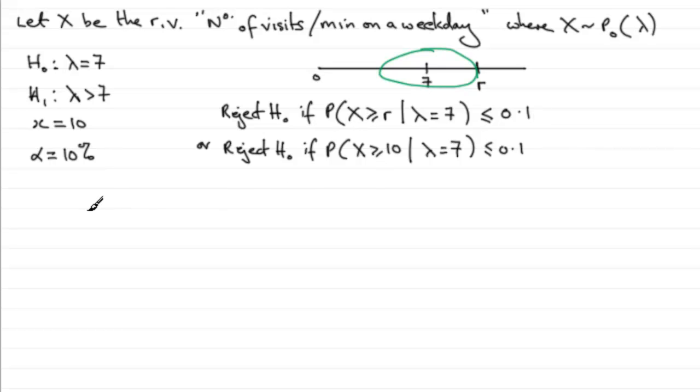So if we write this out then, we can start by saying the probability that X is greater than or equal to R, given that H0 is true, that is that the mean lambda equals 7, is less than or equal to 10% or 0.1.